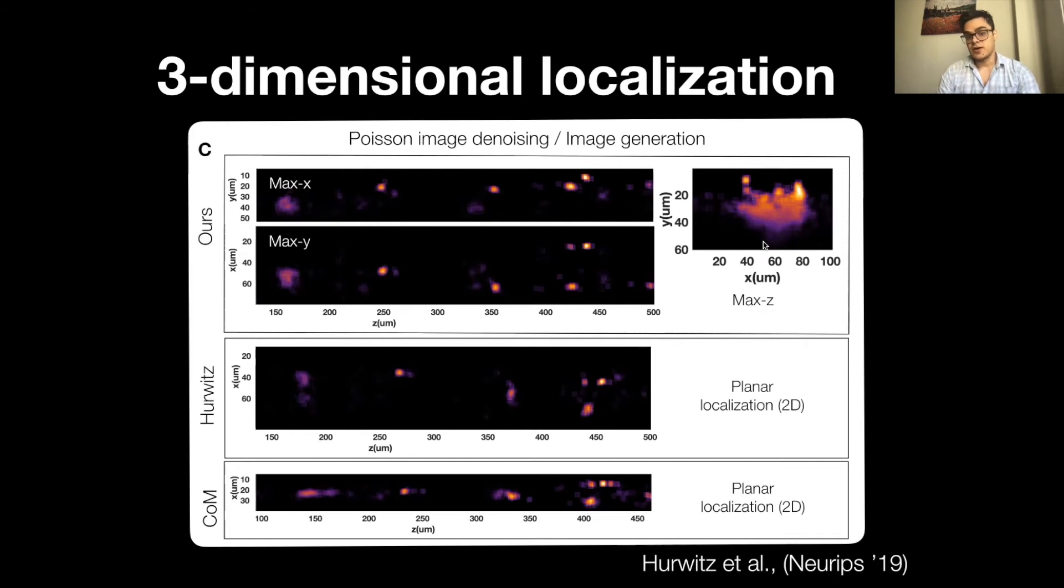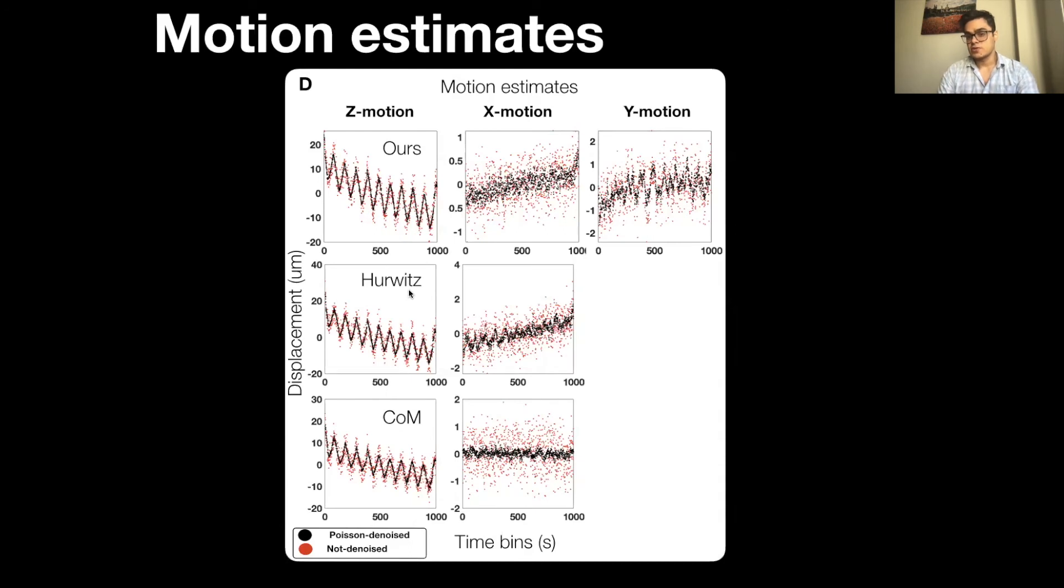Motion estimates using these three different localization methods yields slightly different results. All methods recover the sawtooth pattern of vertical motion as you can see in the left column. However, since methods compress information much differently along the horizontal axes, we get differences in horizontal motion as you can see in the middle column. Interestingly, our method also enables us to estimate depth-based motion as you can see in the right column, where we can estimate how much the probe moves closer and away from the units it's sensing.